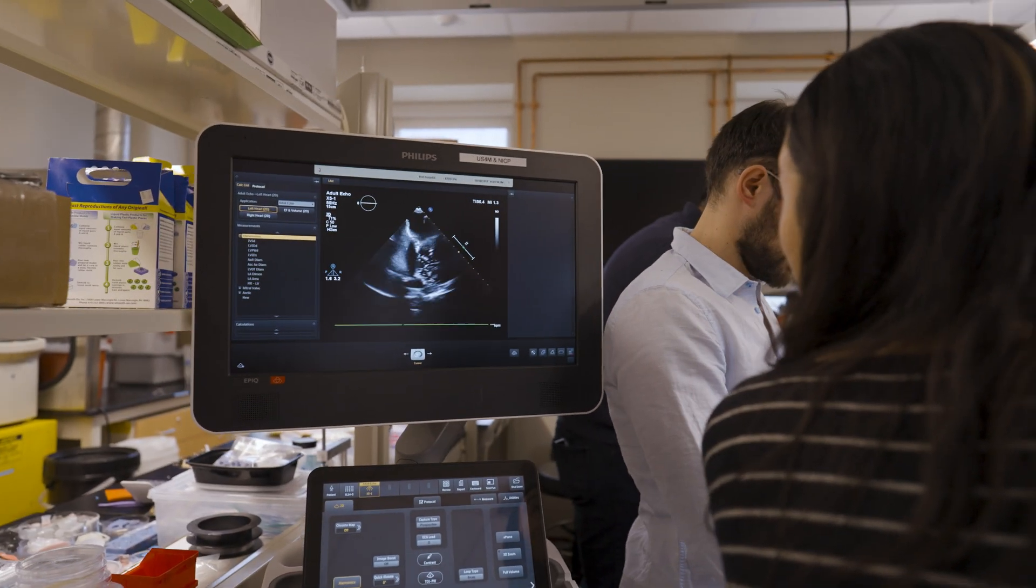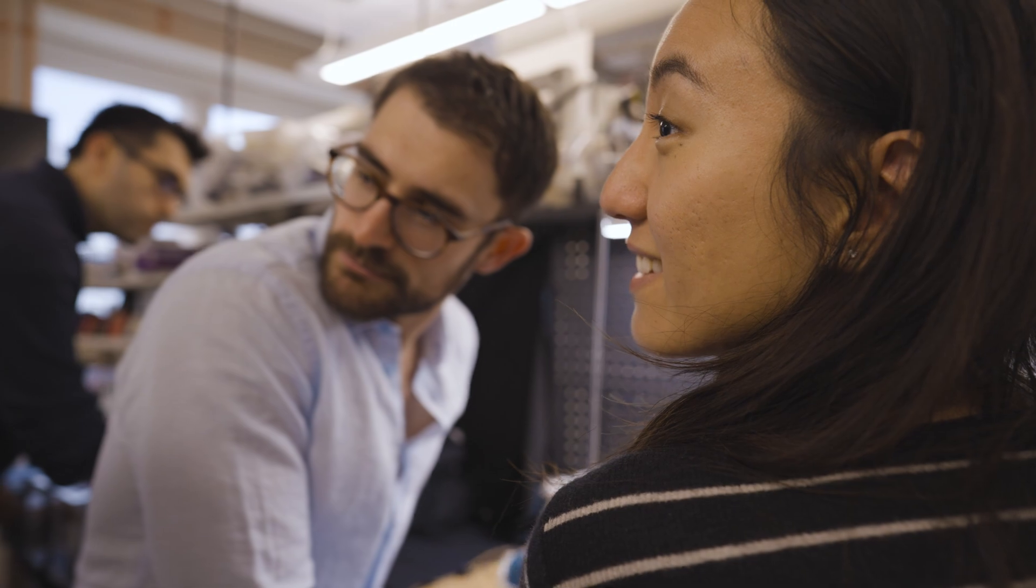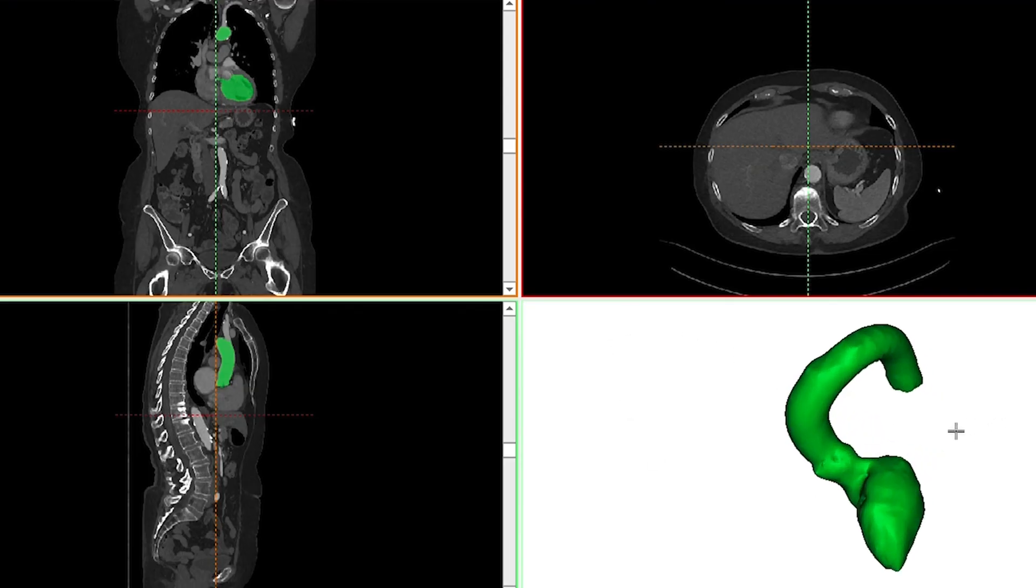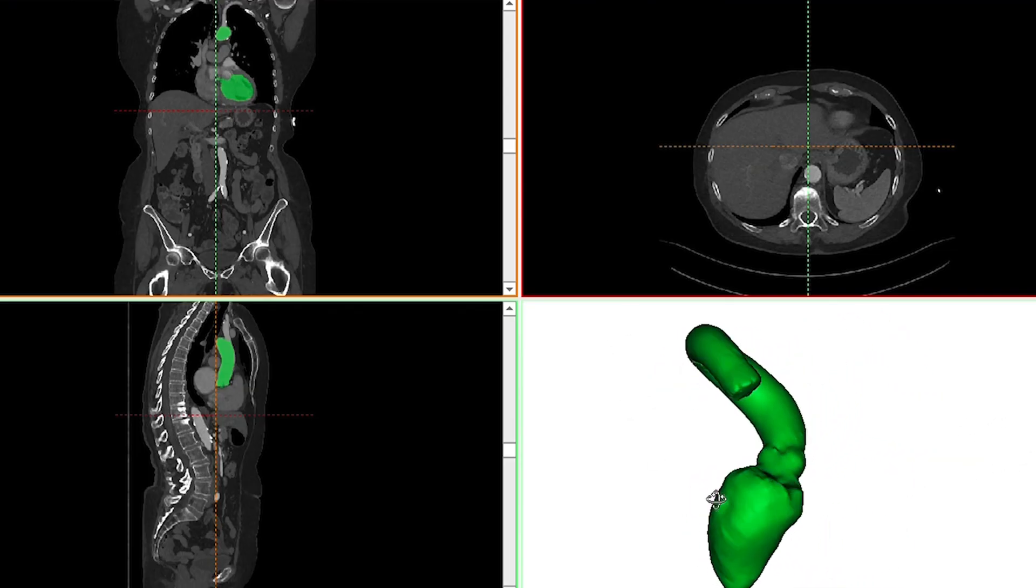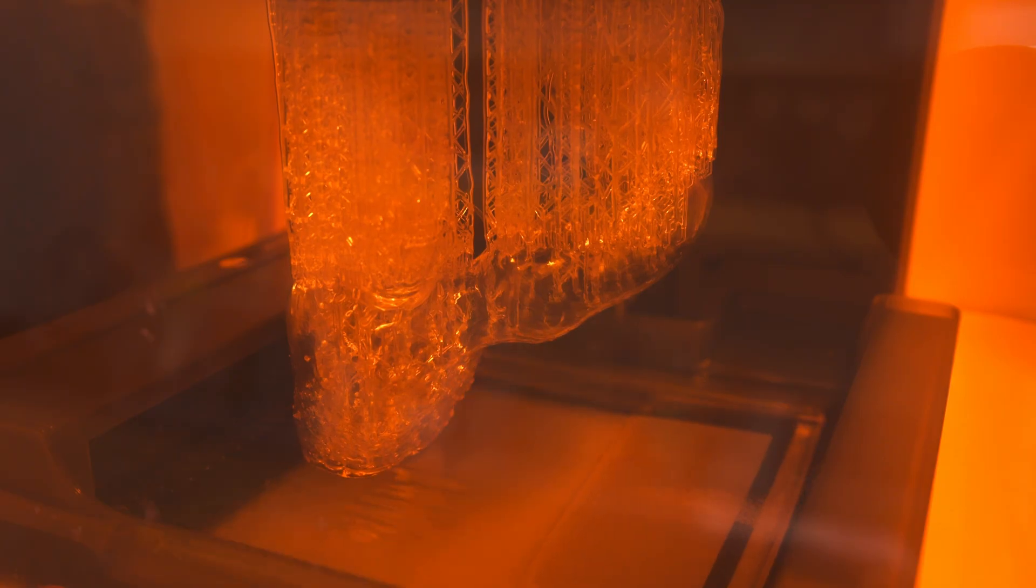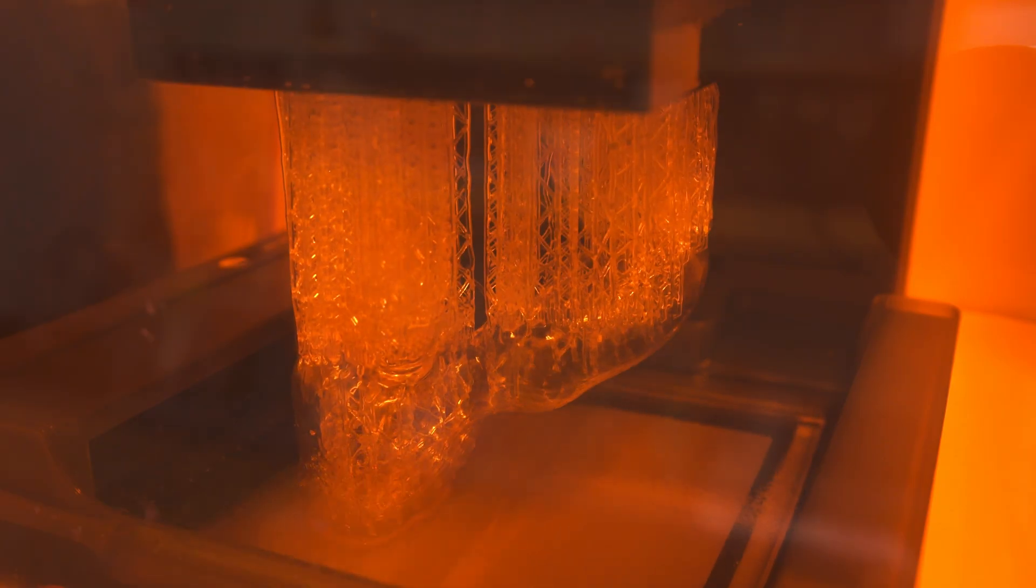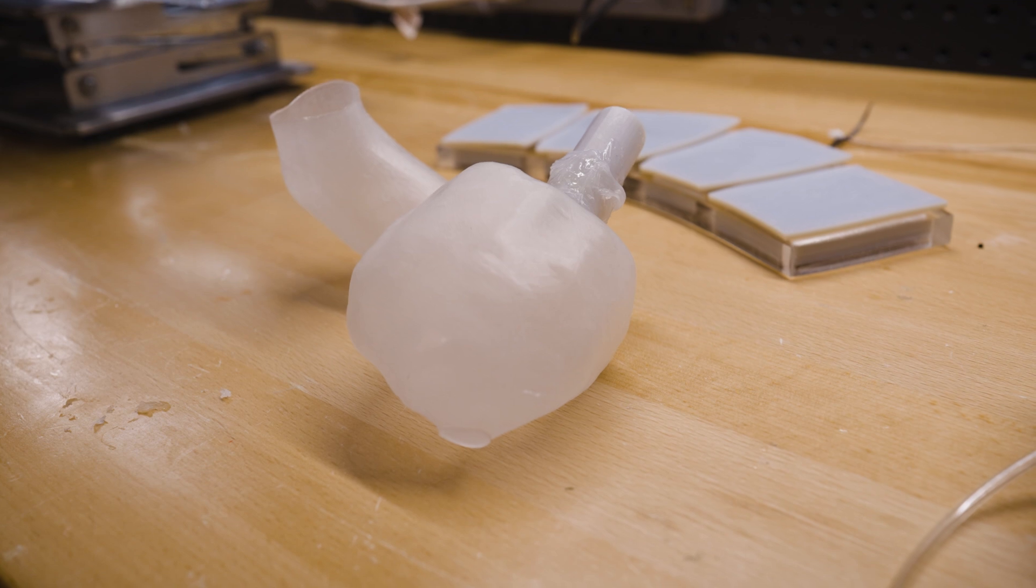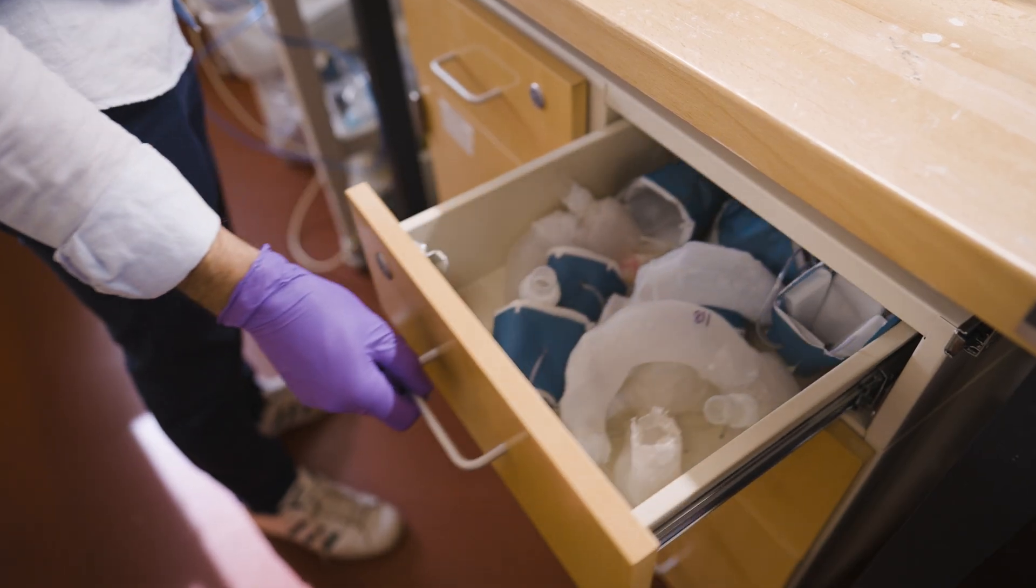The procedure involves first converting medical images of a patient's heart into a three-dimensional computer model which the researchers can then 3D print using a soft, polymer-based ink. The result is a soft, flexible shell in the exact shape of the patient's own heart.